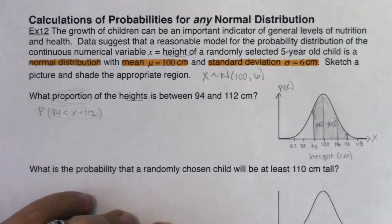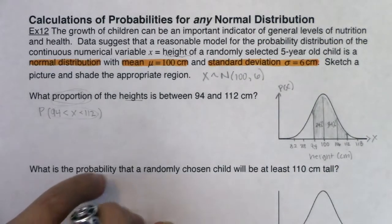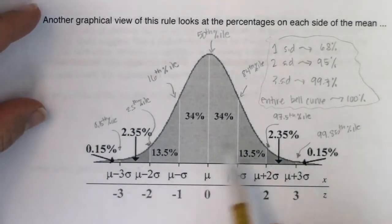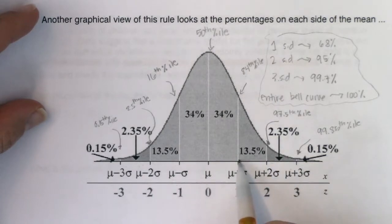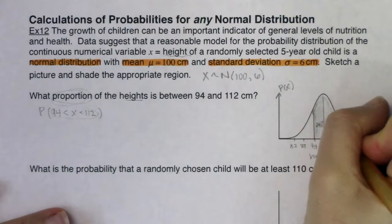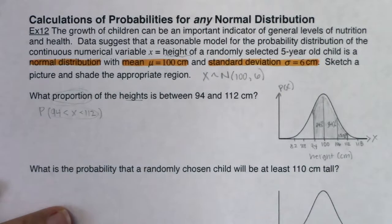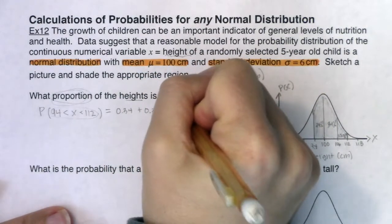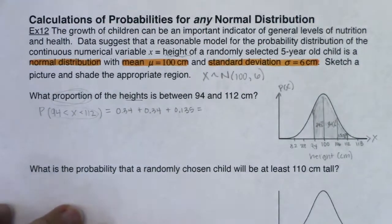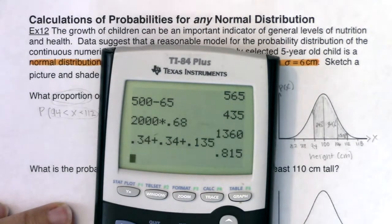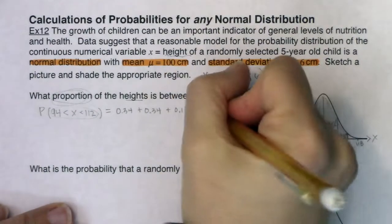Referring back to our breakdown of areas under the curve, the area between one deviation above and two deviations above the mean is 13.5%. So this region also has 13.5%. Adding it all up: 0.34 + 0.34 + 0.135 gives us approximately 81.5%. That's one way to do it.